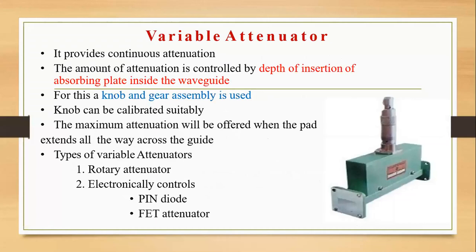In the variable attenuator, you can see in the figure how it looks physically. This is also used in an experiment. The vertical section can be turned — there are readings written on the outer ring. When you turn it, it goes up or comes down. You can turn it clockwise or anticlockwise; it provides continuous attenuation. The amount of attenuation is mainly controlled by the depth of insertion of the absorbing plate inside the waveguide. Based on the direction of turning, you can find what amount of absorption of power has occurred.